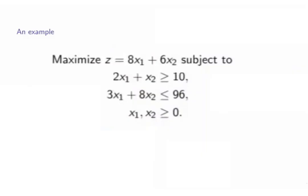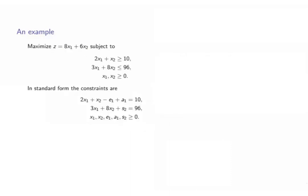We wish to maximize z equals 8x1 plus 6x2 subject to these constraints. For the first constraint, we should subtract a surplus variable and add an artificial variable to the left-hand side. Let's denote this as e1 and a1 respectively.